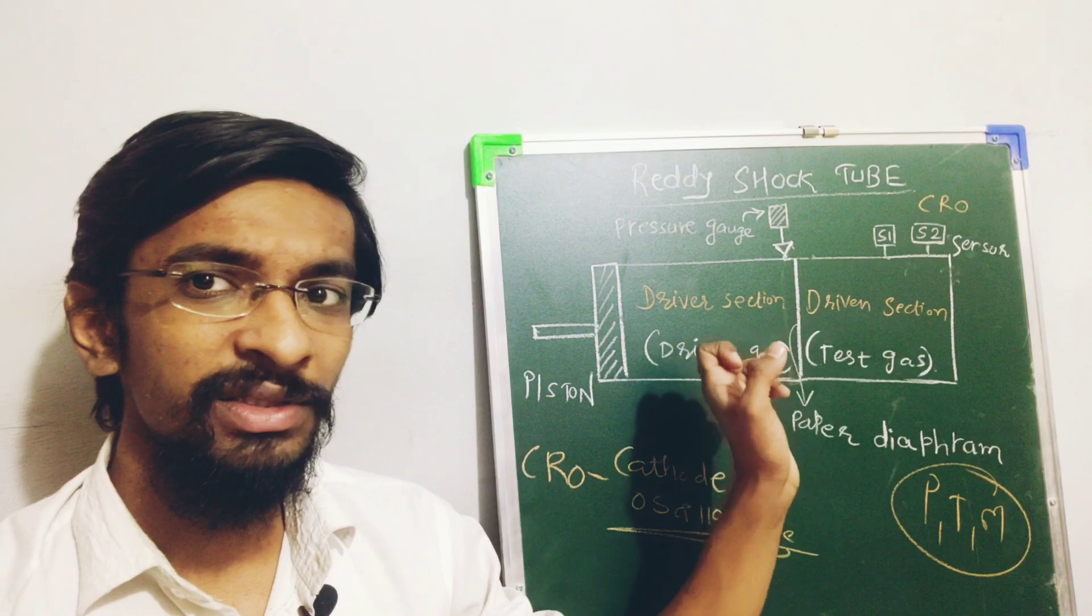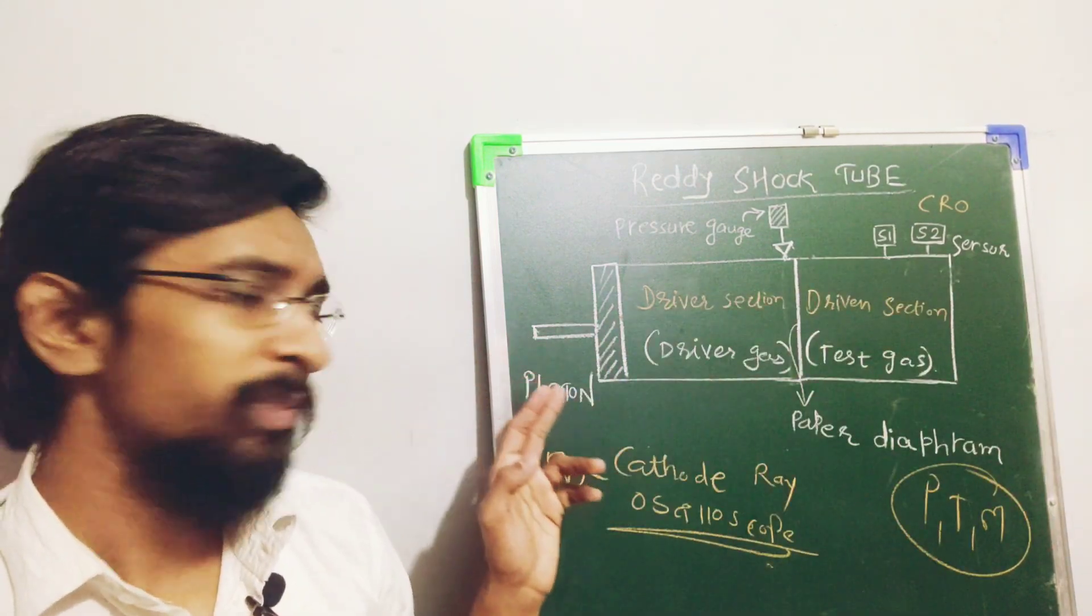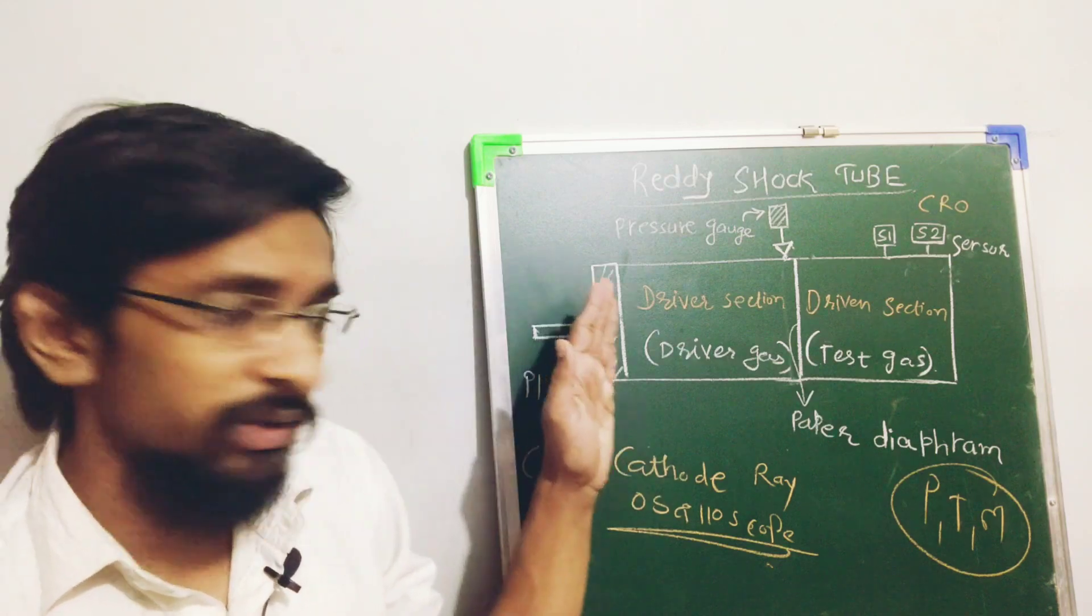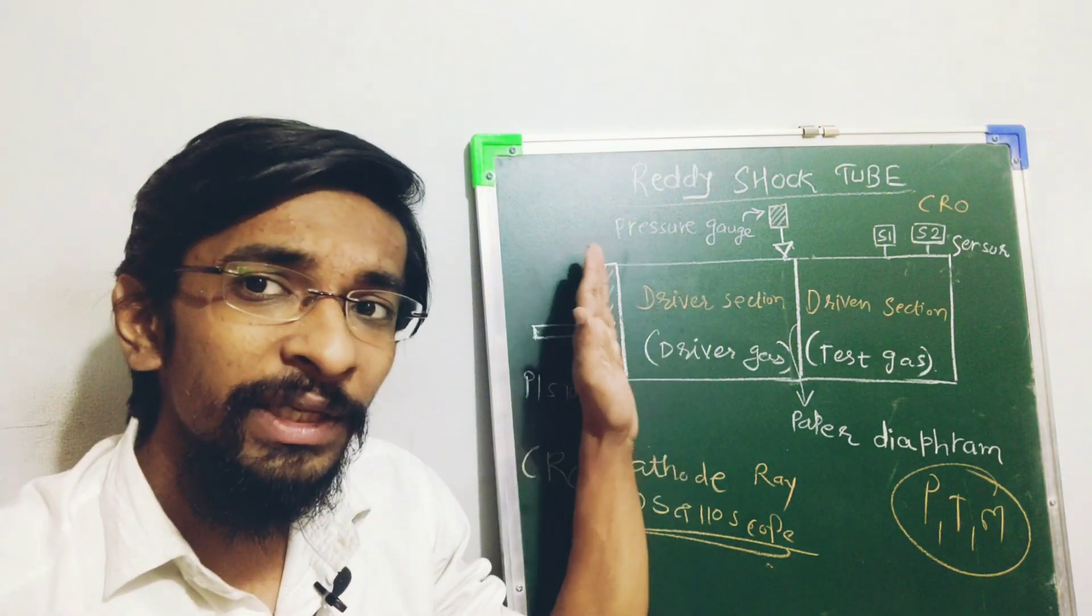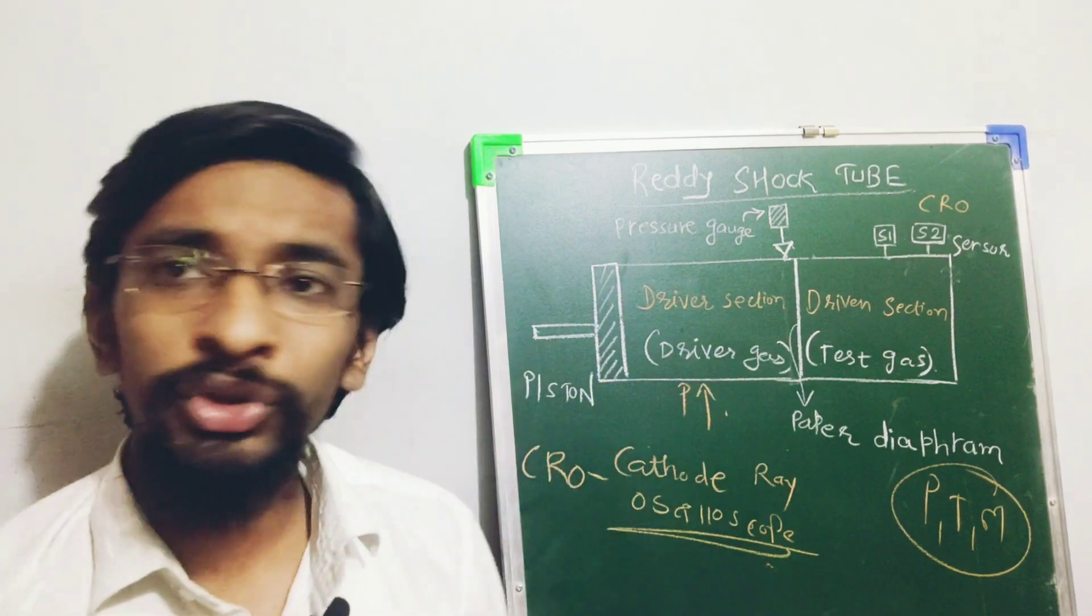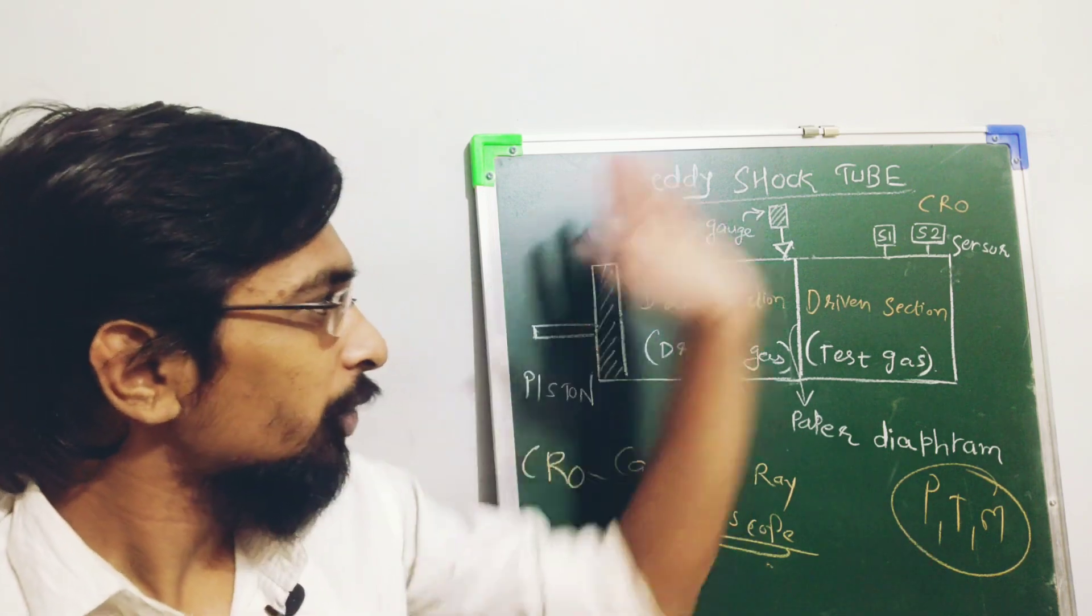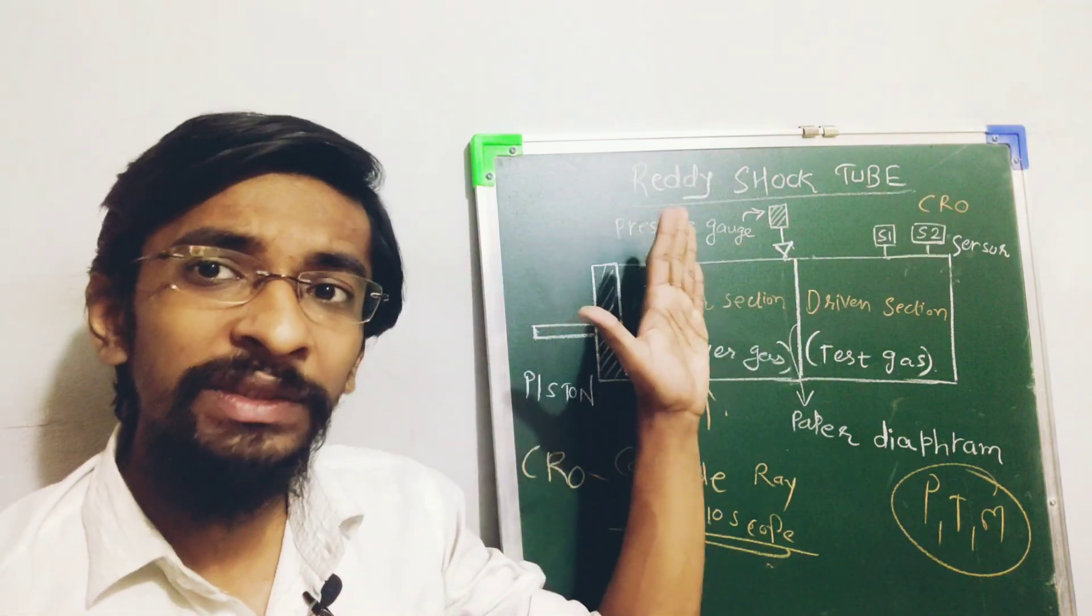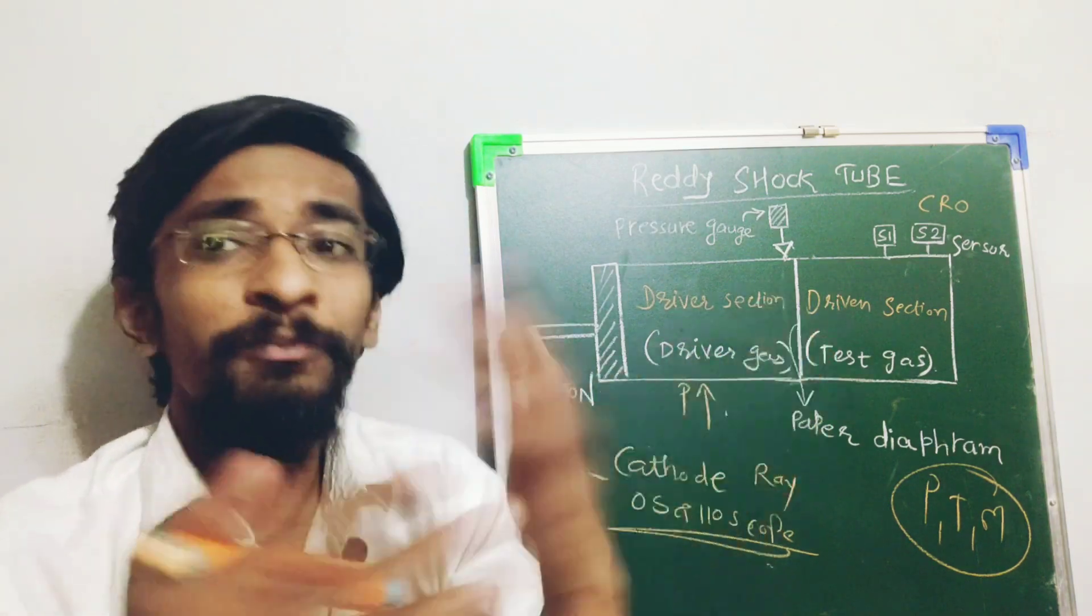Why this is driver and driven? Because as this is piston, we are going to push this and when we push this, gradually here the pressure will increase. Why so, following the ideal gas law and everything, as the volume decreases, pressure will increase and that instant will come when this will get ruptured.